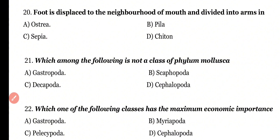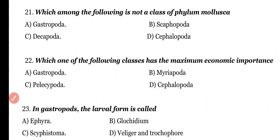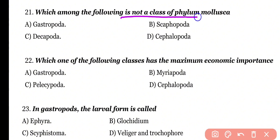Question number 21: Which among the following is not a class of Phylum Mollusca? Options: Gastropoda, Scaphopoda, Decapoda, Cephalopoda. Correct answer is option C. Decapoda is a crustacean, not a class of Phylum Mollusca.